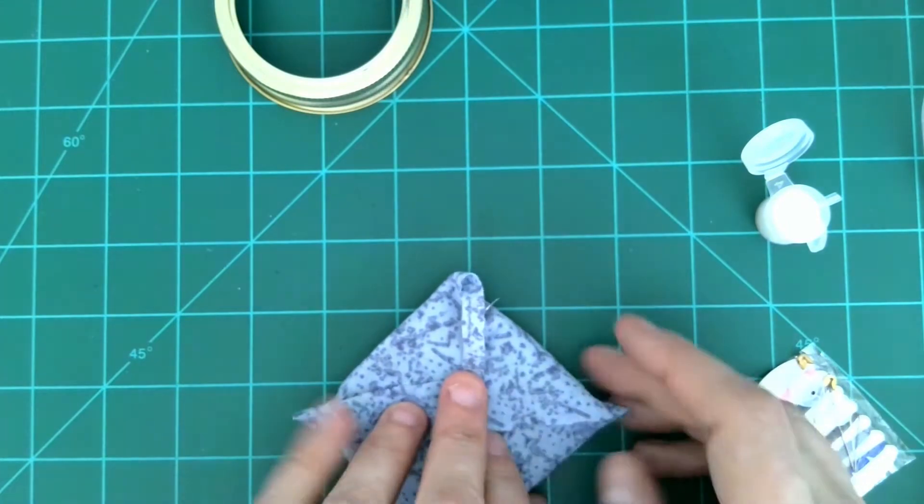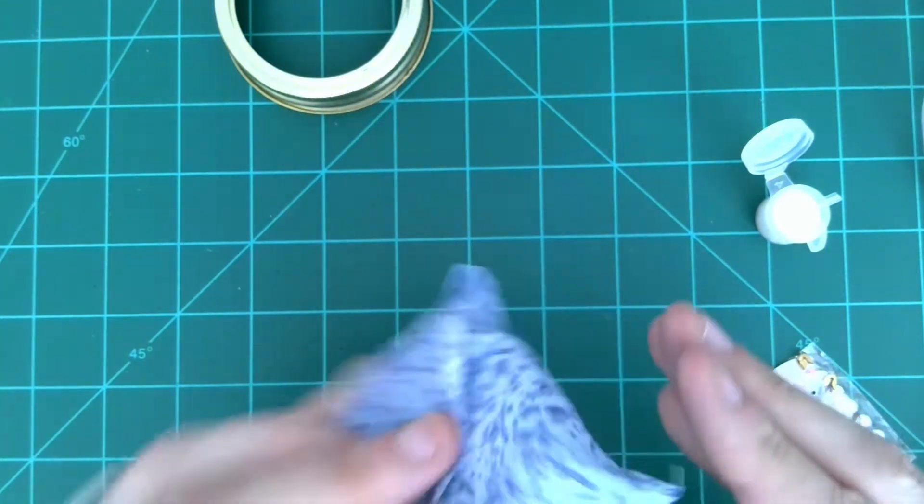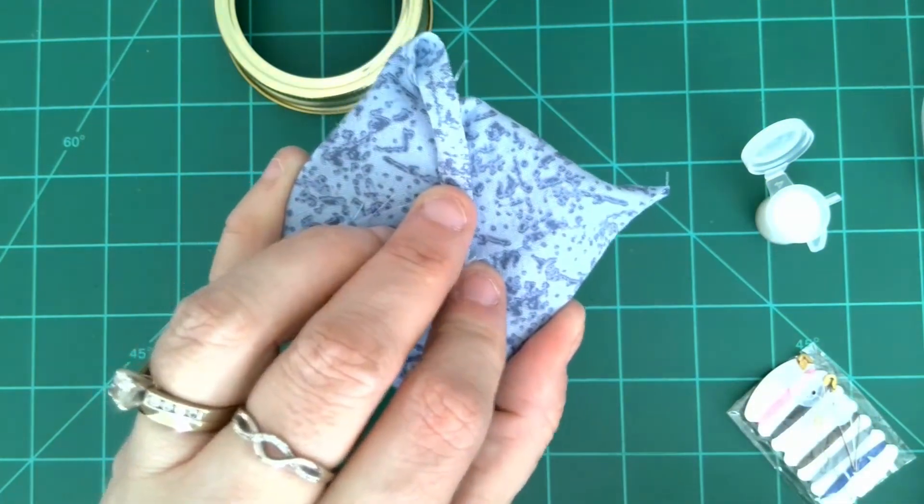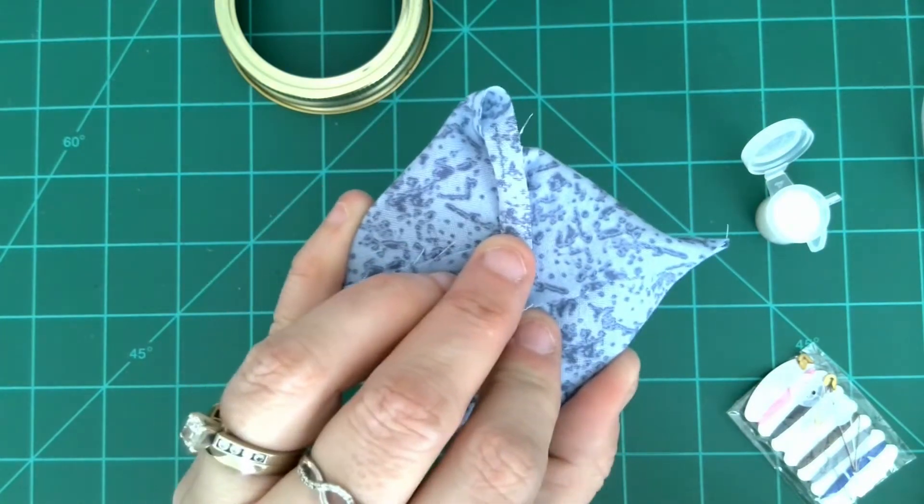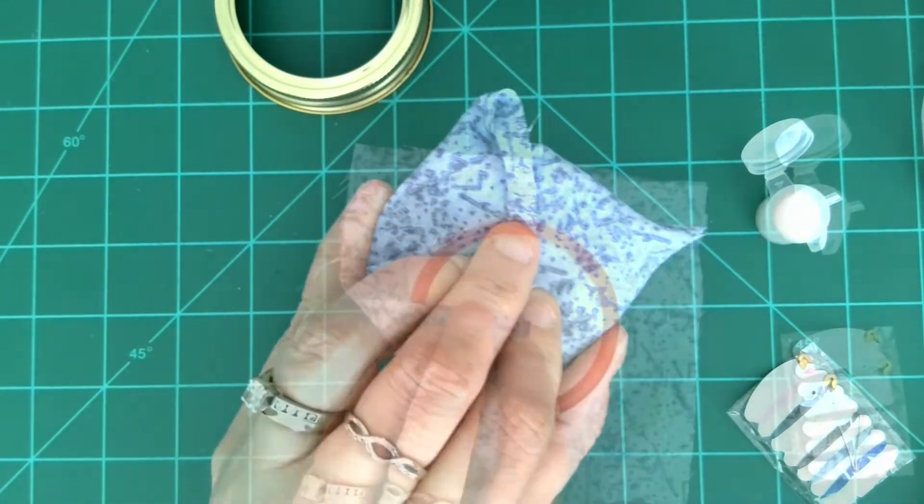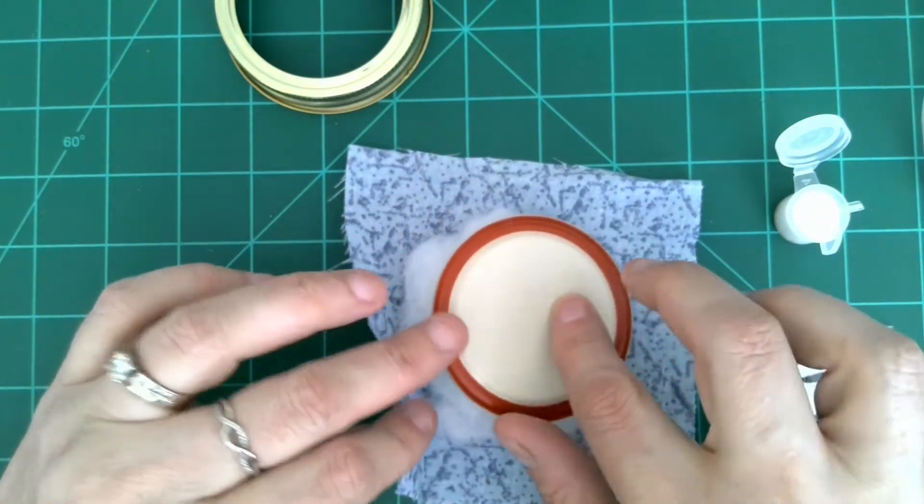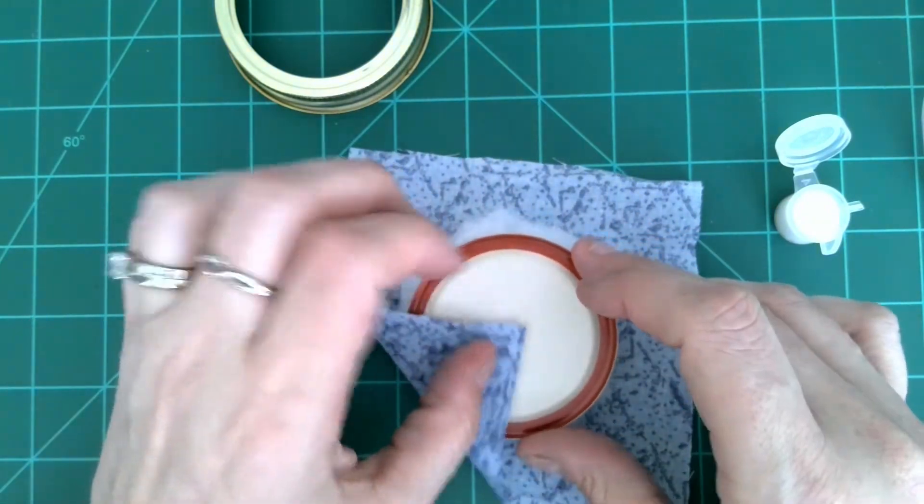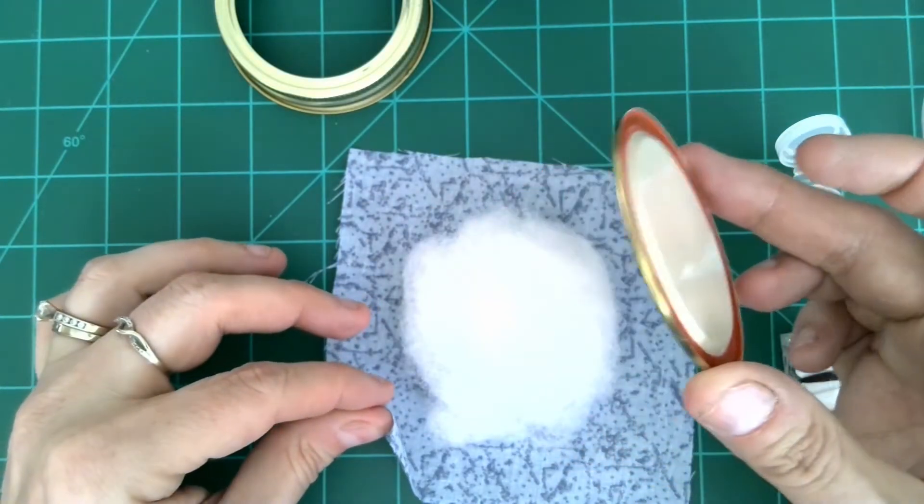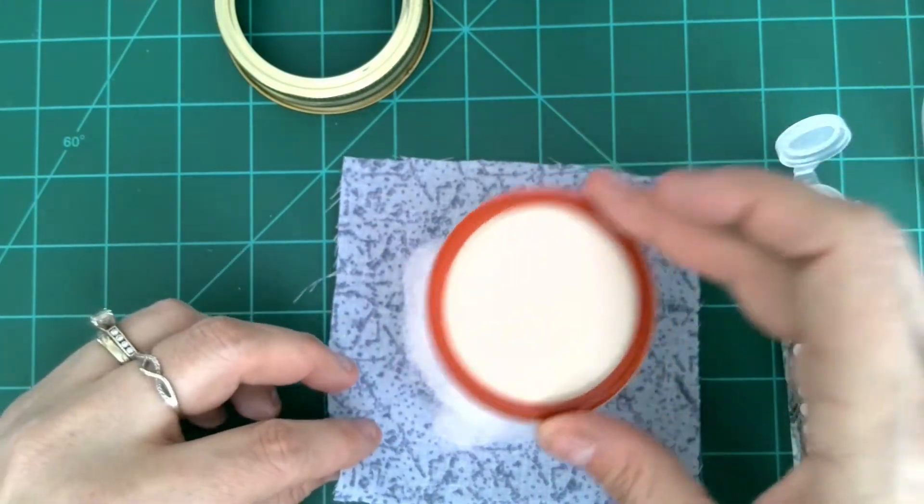I'm going to make sure everything fits. If I wanted to add a little more polyfill, I could. If it's a little too big to fit, I can also take some out. My next step is going to be to glue my fabric onto the back of my lid, and I've got my lid setting on the polyfill.